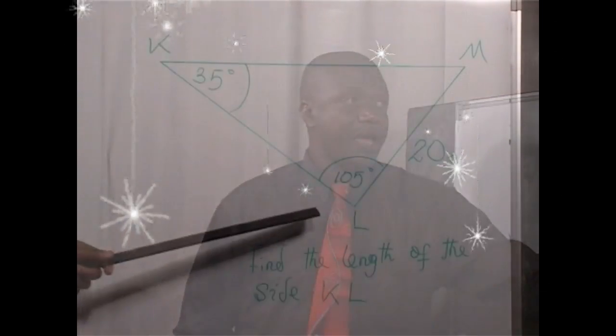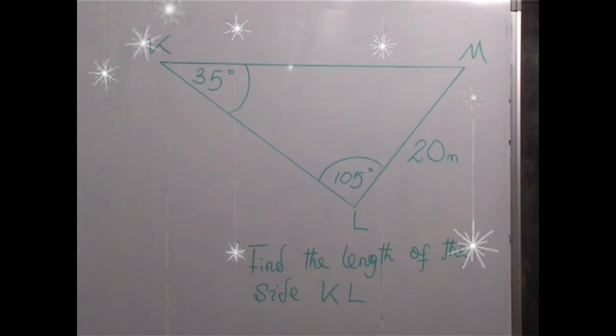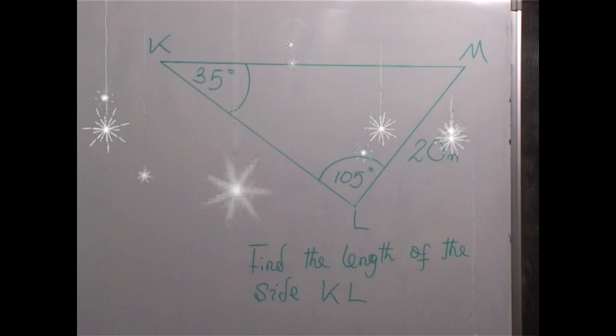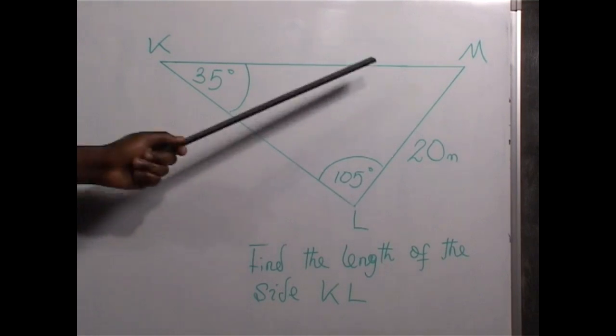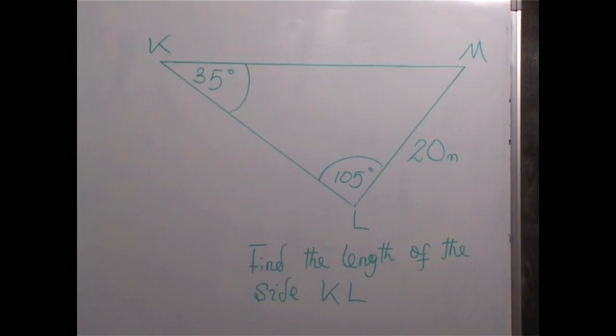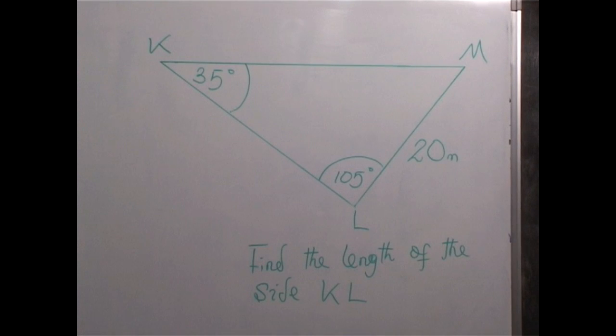With us is a triangle KLM, in which the angle at K is 35 degrees, the angle at L is 105 degrees, and the side LM is 20 meters. We have been asked to find the length of the side KL. The first thing we need to do is to find the size of the angle at M. The angle at M is 40 degrees.